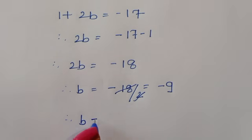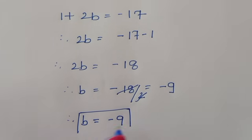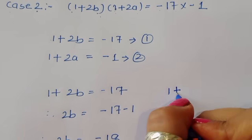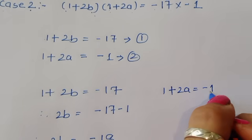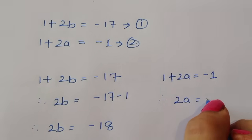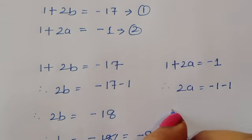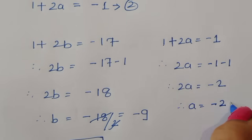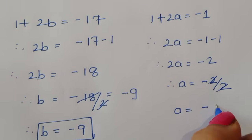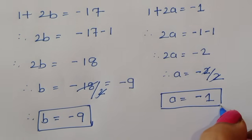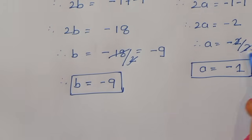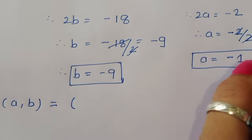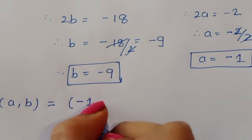Now finding the value of a in Case 2: equation 2 is 1 + 2a = −1, therefore 2a = −2, therefore a = −1. So from Case 2, a = −1 and b = −9.